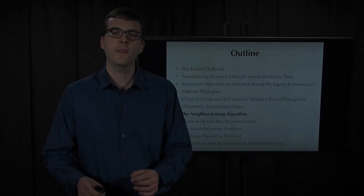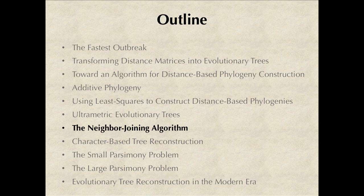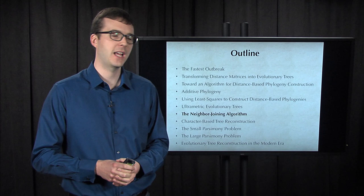The method that we're looking for for distance-based phylogeny construction is called the neighbor-joining algorithm, which was introduced in 1987. It's a result so fundamental to bioinformatics that it has been cited 30,000 times and is one of the top 20 most cited papers over all scientific fields.